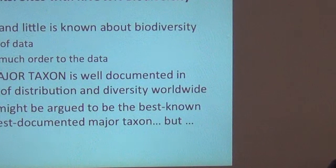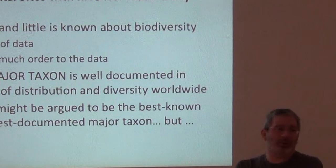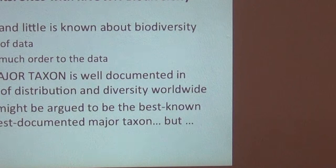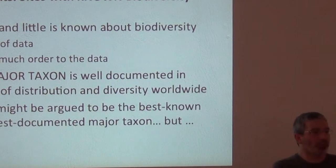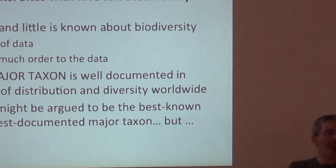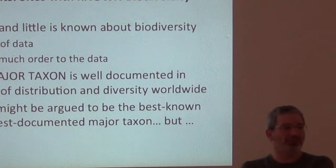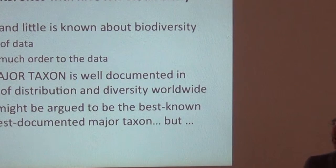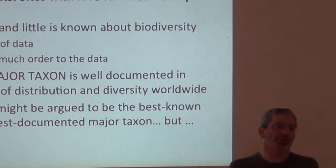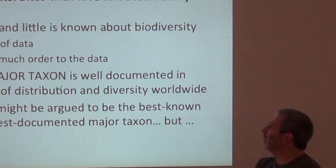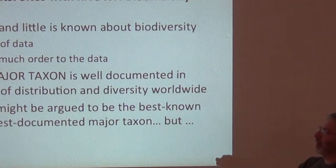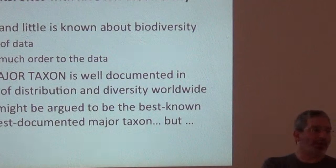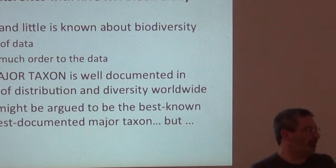The real basics are that at the same time we know a lot and we know very little about biodiversity. There's lots of data but not much order to the data — there's a mix of data leaks and non-standard formats, meaning that usable data will be a very small proportion of what has been sampled. It's not an exaggeration to say that no major taxon is well documented across the whole world.